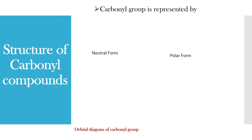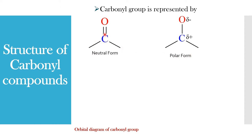Carbonyl group is represented by the structure C double bond O. The carbonyl group is represented by two forms: the neutral form and the polar form. Carbon is surrounded by one pi bond and three sigma bonds. In the polar form, carbon is having partial positive charge and oxygen is having partial negative charge.